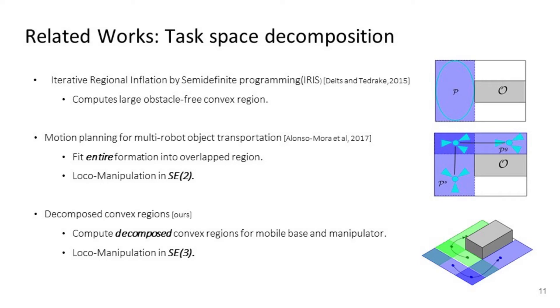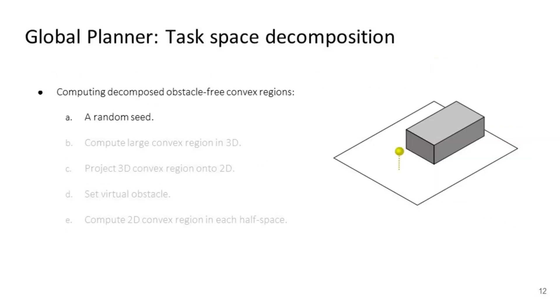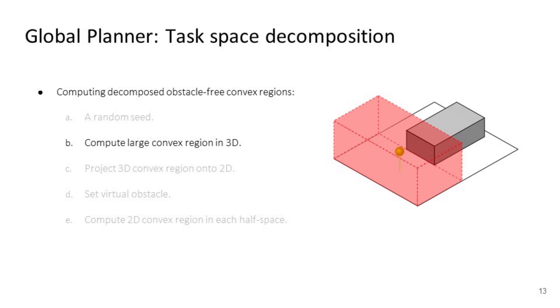So how does our task space decomposition work? Similar to the IRIS algorithm, obstacle-free convex regions are represented by linear constraints. Beginning with an initial guess by getting a random point from workspace as a seed, we iteratively compute a convex polytope restricted by obstacles. This red polytope is a convex task space region for the manipulator.